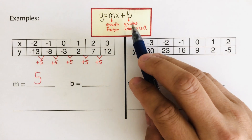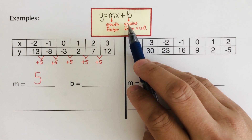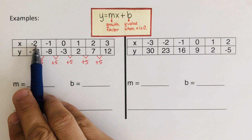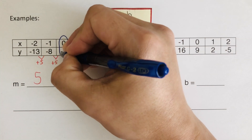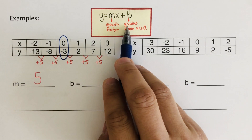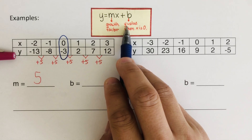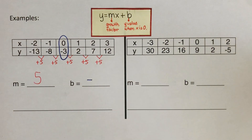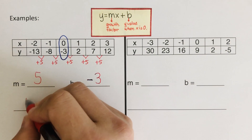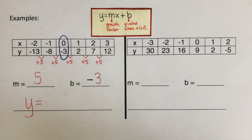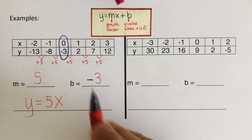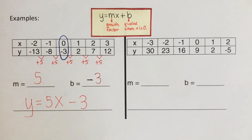Remember, the y-intercept is the y-value when x is 0. We look for x equal to 0, which is right here. The y-value at that point is negative 3, because b is the y-value when x is 0. So b is negative 3, and the equation is y equals 5x minus 3.